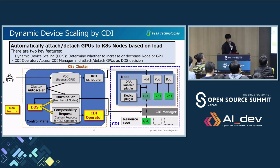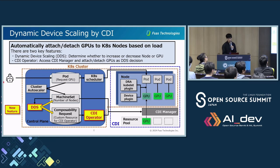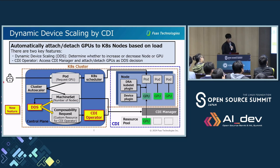I will explain the simple processing flow. The user first creates a pod. If the cluster runs out of resources such as GPUs, the Kubernetes scheduler will not be able to deploy the pod — such a pod is called an unschedulable pod. To deploy this pod, DDS determines whether to add additional GPU or just add a node. If DDS determines to add only GPU, the CDI operator requests CDI manager to add GPU. After CDI manager adds GPU to the node, Kubernetes scheduler can schedule the pod. When the scheduler deploys the pod, features for using the GPU such as DRA (dynamic resource allocation) and device plugin work.